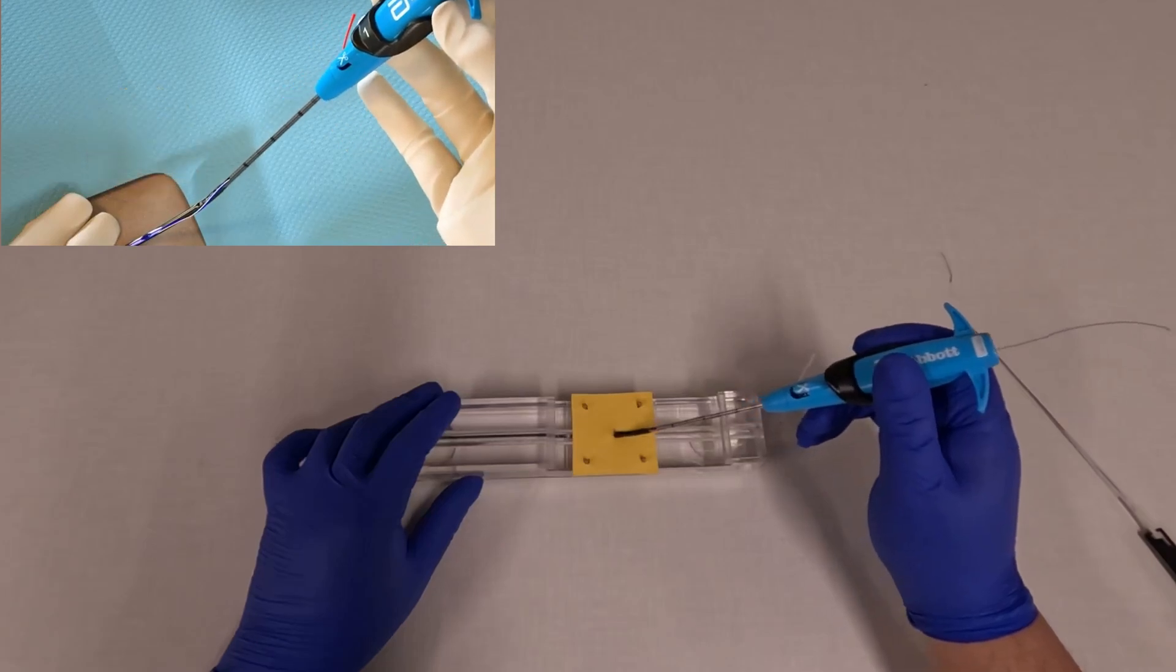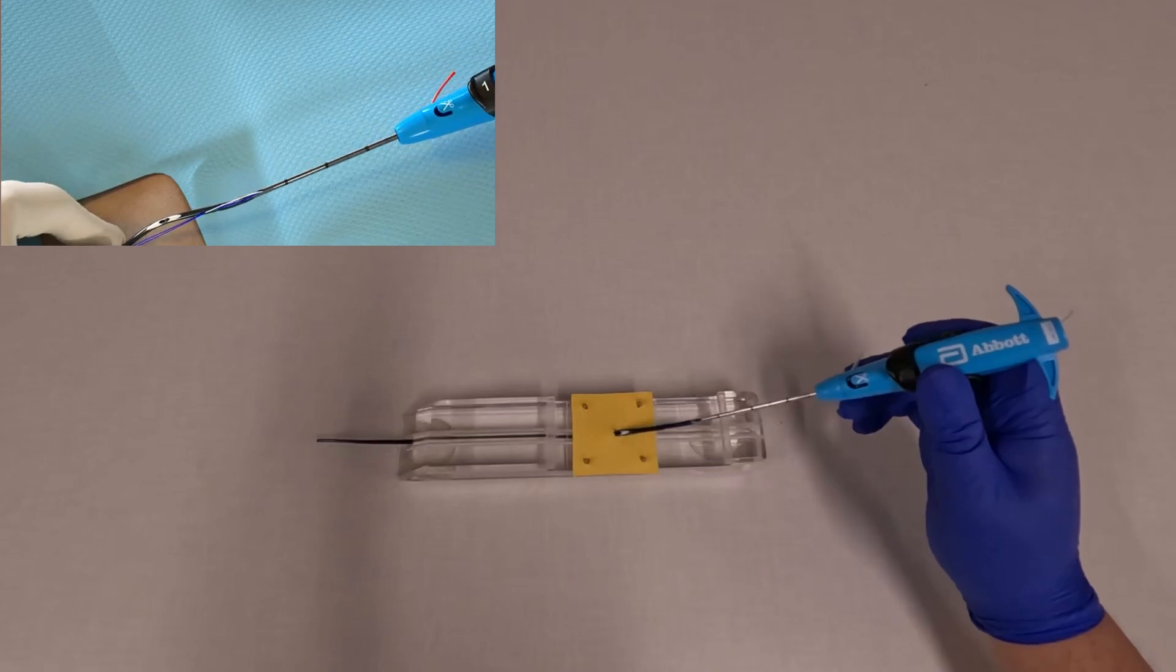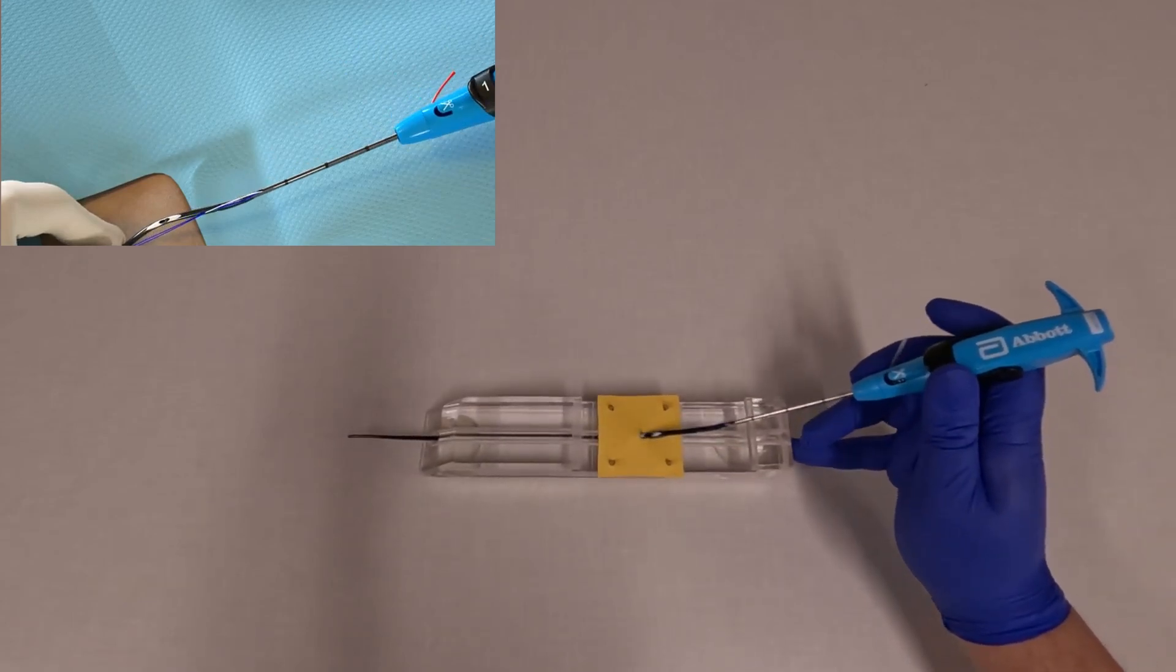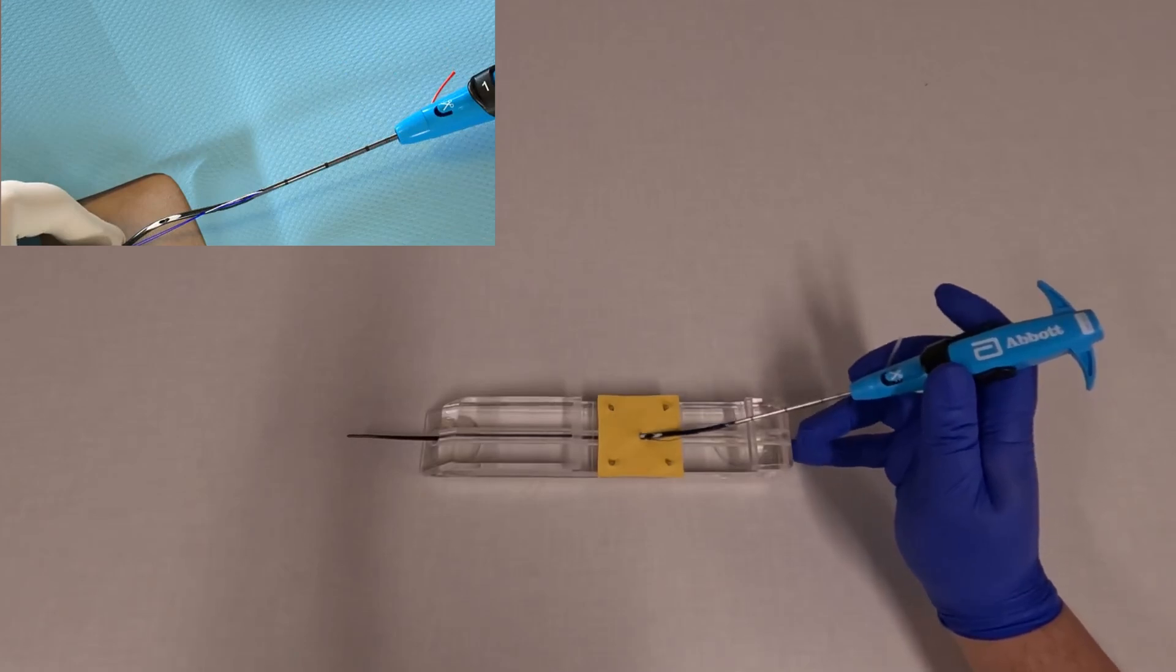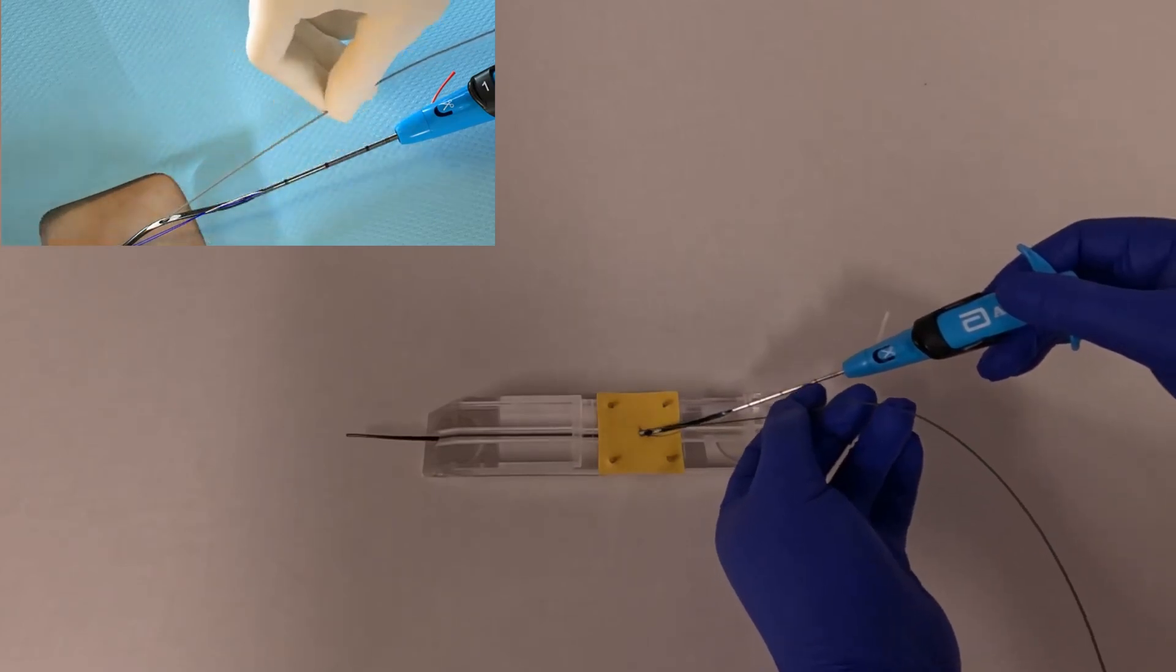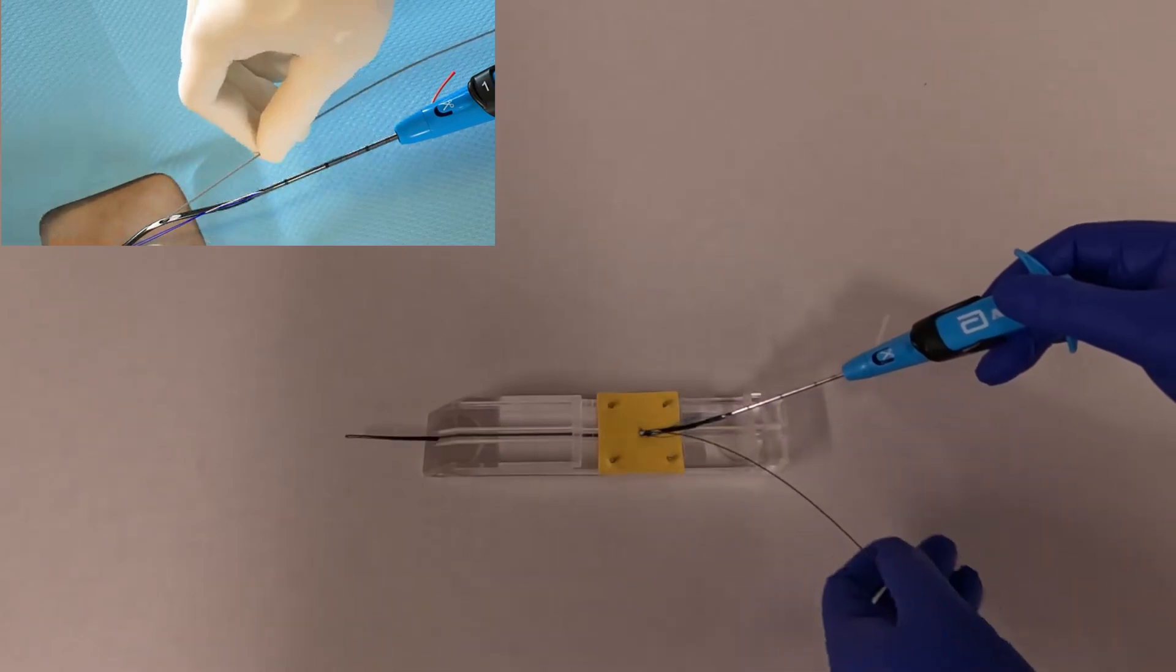Next, we can pull out slightly until the wire access port is outside the skin level. You can feed your guide wire back in. This allows you to maintain luminal access.